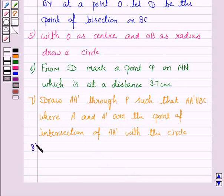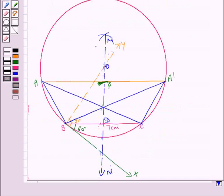Now the last step is to join AB, AC, and A'B, A'C. So we have joined AB, AC, A'B, and A'C. The required triangles are ABC and A'BC.